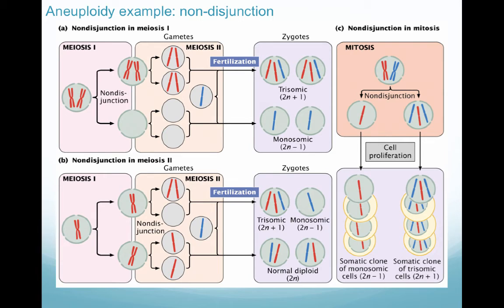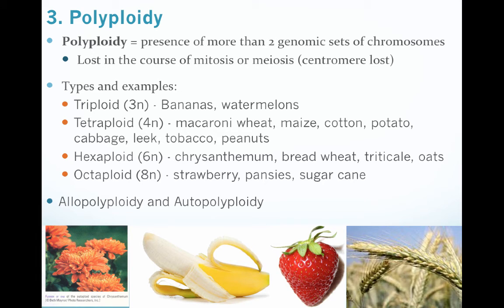Non-disjunction in mitosis happens in a very similar way as it does in meiosis. Make sure to read through the chapter and spend time on this concept, because it can get pretty confusing, especially as you add more chromosomes into the mix. The third major category is polyploidy, where you have more than the normal genomic sets of chromosomes — more than two genomic sets.